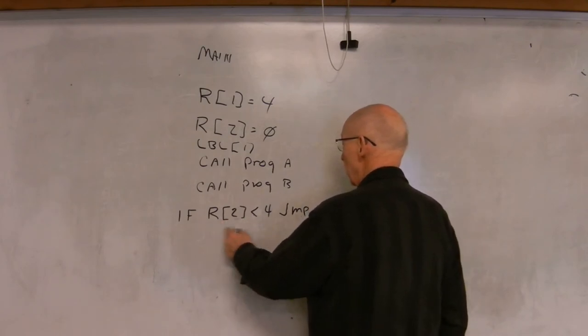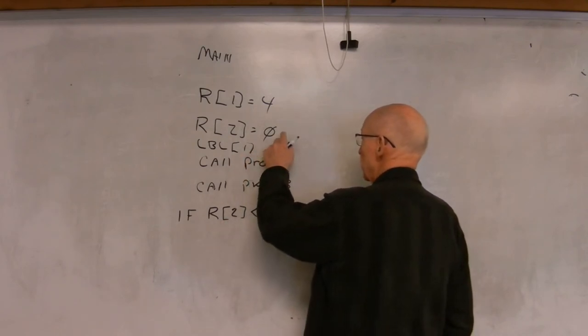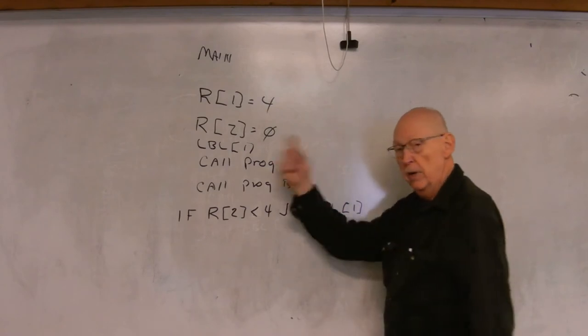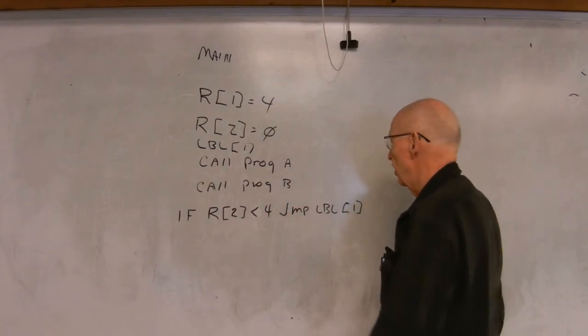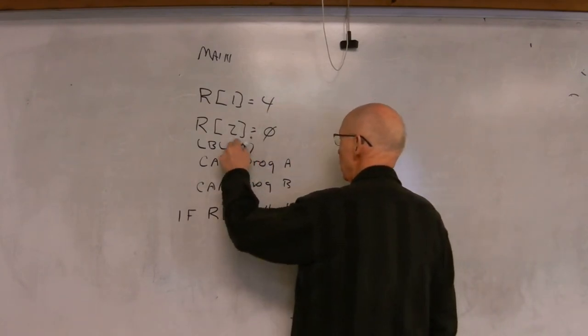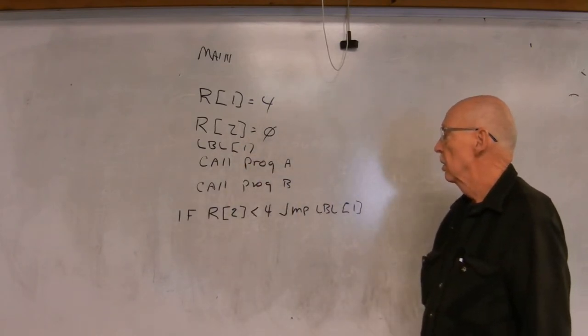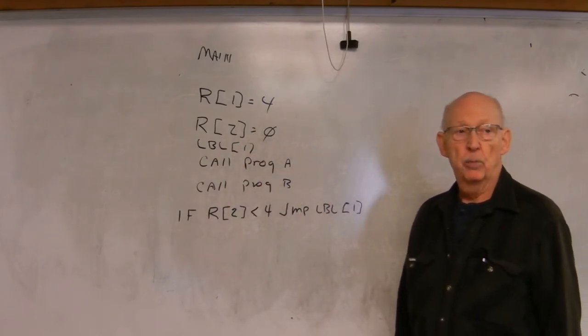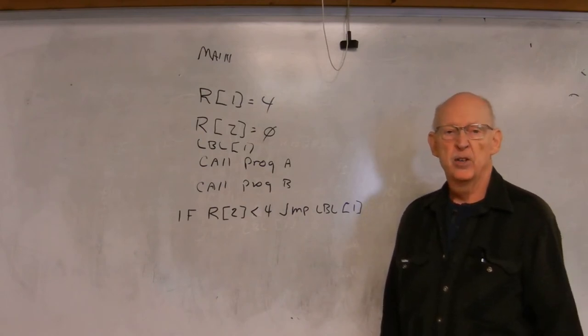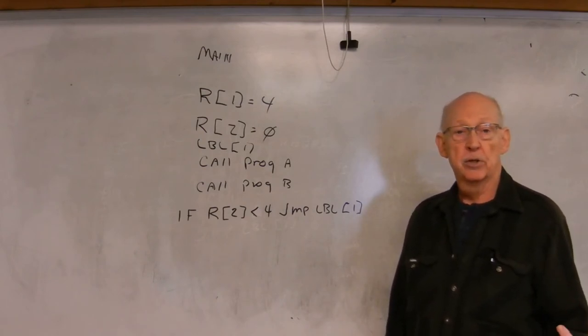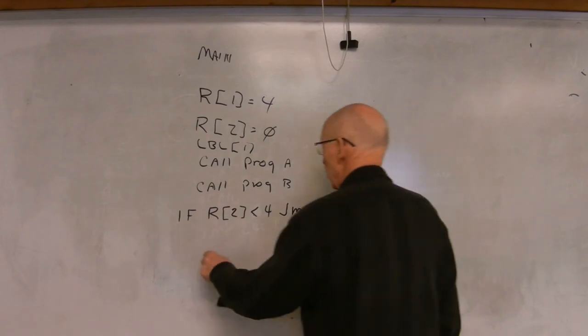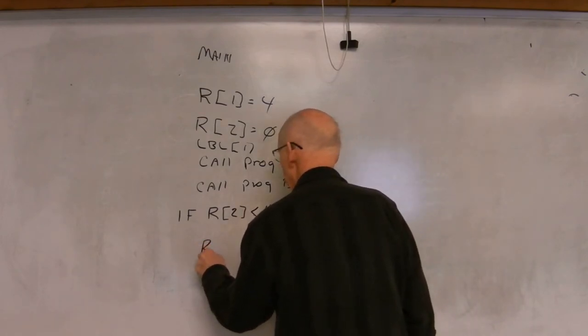But now if we don't do anything else, then register two is going to stay at zero and it's just going to keep looping. So we need to increment the value that's in register two. Increment means you're going to add one to it. Decrement means you're going to subtract one. So we're going to have a statement here that says R2 equals...